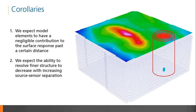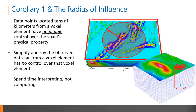What follows from these scaling relations are the expectations that the model elements have negligible contributions to the surface response past a certain distance, and that the ability to resolve fine structures decreases with depth. Using the first corollary to our advantage, we can reduce computation time by safely saying that a voxel element far from an observation point has no contribution. In VOXI, this is quantified by a radius of influence that is applied cylindrically throughout the model space.